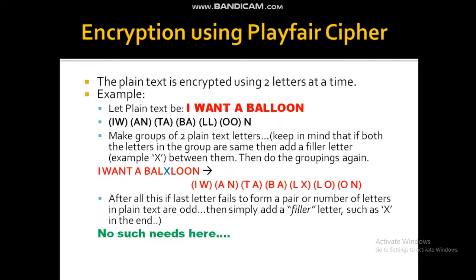Now let's come to actually encrypting messages using Playfair Cipher. You need to start by making groups of 2 plain text letters at a time. Let the plain text be 'I want a balloon'. Start making groups taking 2 plain text letters at a time: IW form one group, AN form the second group, and so on — TA, BA, LL, OO — and N is left alone.